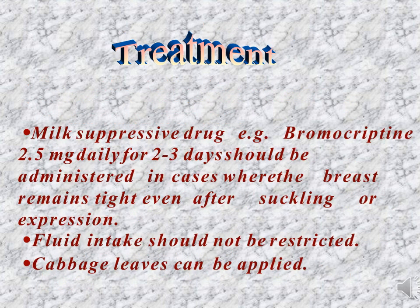Treatment for breast engorgement: Milk-suppressive drugs, e.g., Bromocriptine 2.5 mg daily for 2–3 days, should be administered in cases where the breast remains tight even after suckling or expression. Fluid intake should not be restricted — the mother should take plenty of fluids. Cabbage leaves can be applied; it is the best home remedy for breast engorgement.